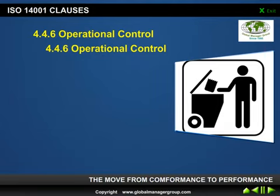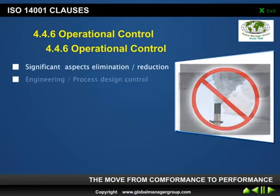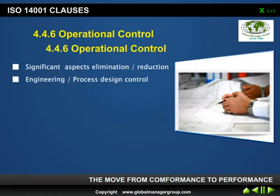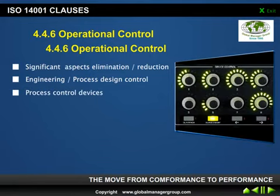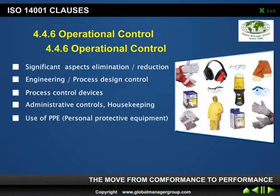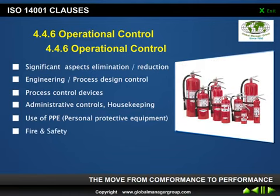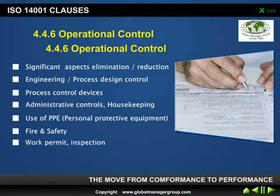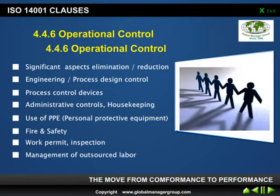A few examples of operational control measures include: hazard elimination or reduction; engineering process design controls — for example, if your DG set produces excessive noise, you can have a silencer provided as a design change; process control devices such as circuit breakers or power-saving equipment; administrative controls like housekeeping follow-up and checklists; providing personal protective equipment such as ear plugs; fire and safety control equipment; work permits and inspection mechanisms; and management of outsourced labor.